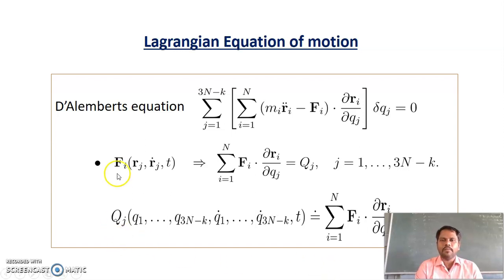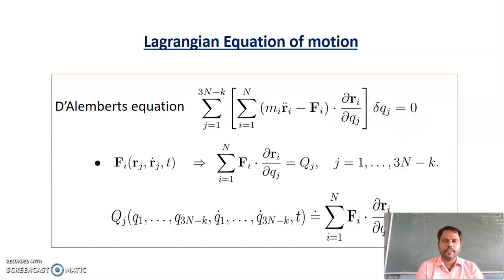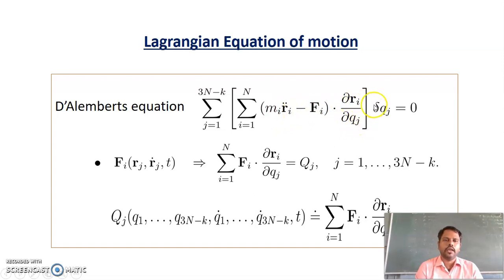We know D'Alembert's principle. Mathematically it is represented by summation from I equal to 1 to N of (P_i dot minus F_i) dot into delta R_i equals 0. Substituting for generalized displacement we arrive at the expression: summation over J from 1 to 3N minus K, times summation from I equal to 1 to N, of M_i times (R_i double dot minus F_i) into (∂R_i / ∂Q_J) times delta Q_J equals 0. Here we have two terms.